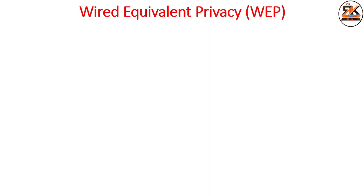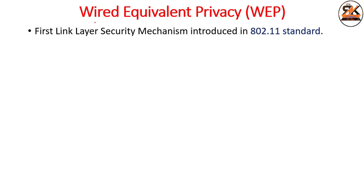In this lecture we will study about a standard of security in the wireless network, that is WEP. WEP stands for Wired Equivalent Privacy. WEP is a first layer security mechanism that was introduced in the standard 802.11, given by the IEEE.